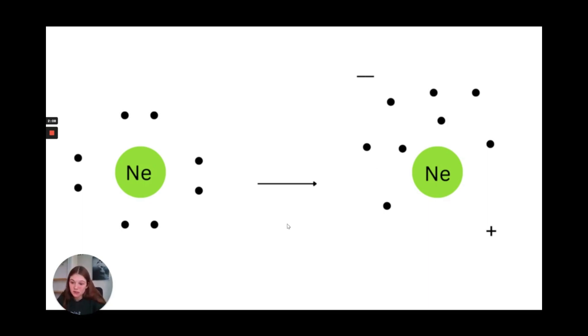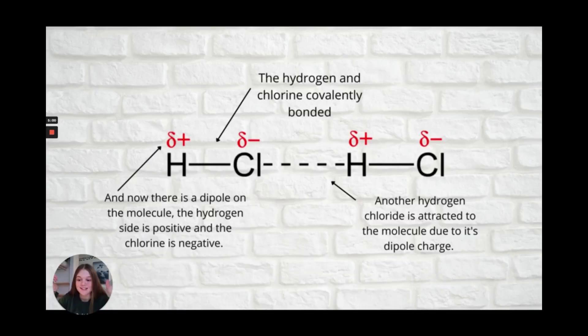This creates what's known as London forces. It's basically a temporary dipole that forms on the molecule and affects how it interacts with other molecules. That is the first of the intermolecular bonds, London forces.